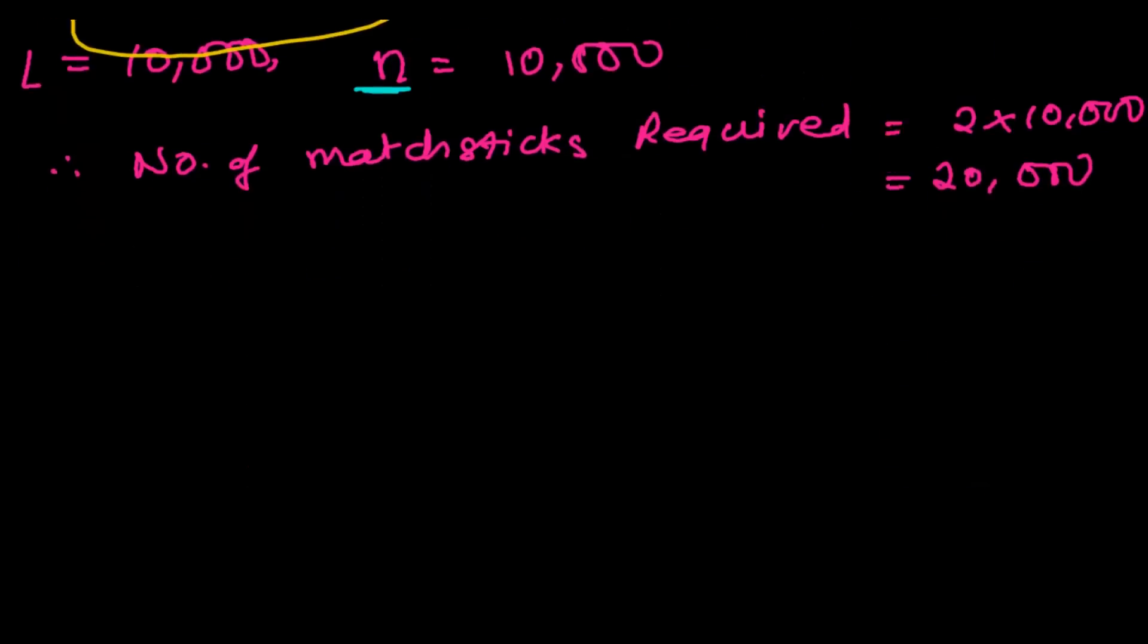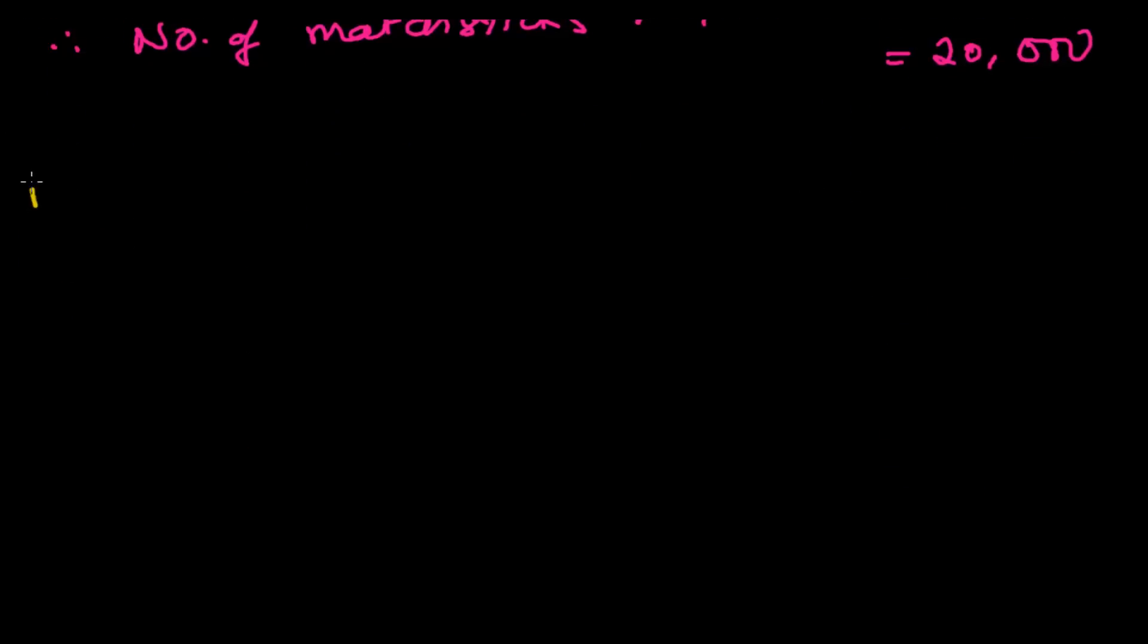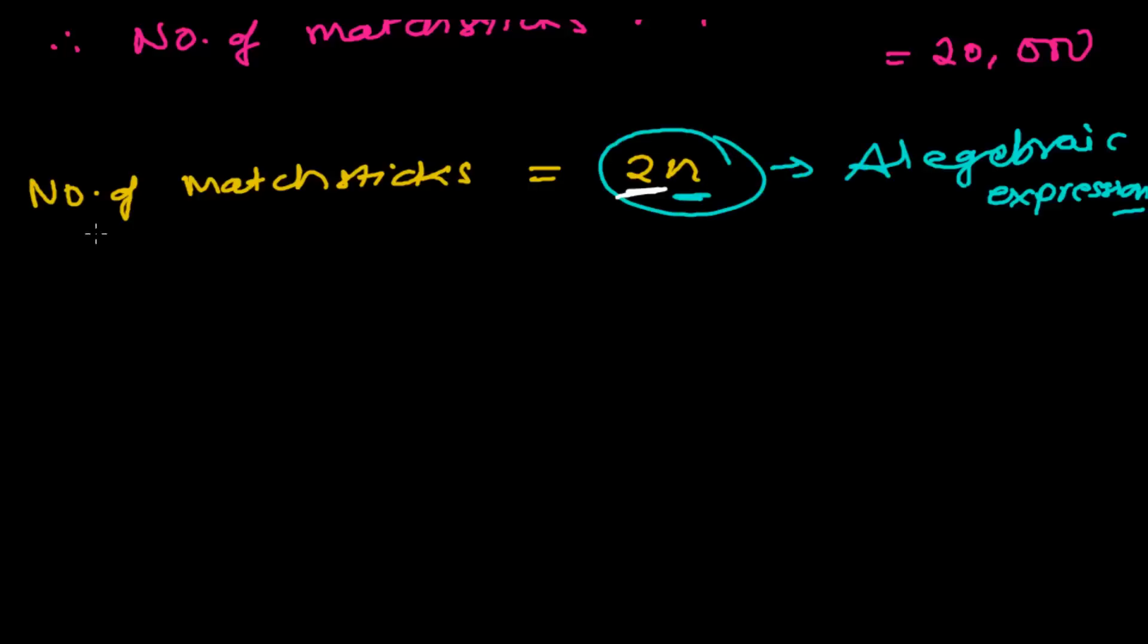Now I want to talk about algebraic expressions. The number of matchsticks we need, we give that by the 2n rule. Here, this n is the variable, and this whole thing I will say is an algebraic expression. More examples: 2n minus 3, 2n plus 5, or 45n divided by 7. In algebraic expressions, you will always see a number - definitely you'll see a number, one or more. At the same time, you'll also see arithmetic operations - subtraction, addition, division. And here there's a multiplication sign too; we're just not writing it.